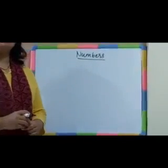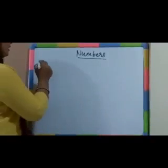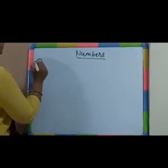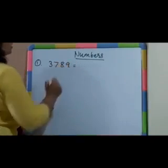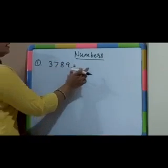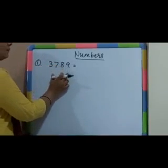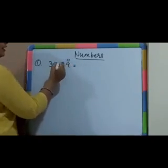In numbers, the first topic is how to write a particular number in word form. Let's say, example, first: 3, 7, 8, 9. Now, how to write this particular number in word form? So, before writing a number in word form, we have to write its place value.